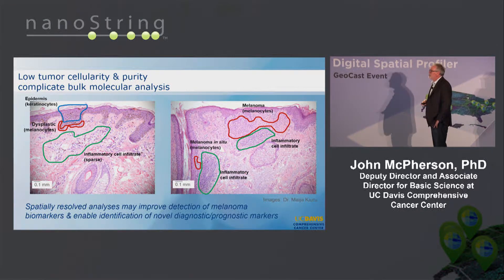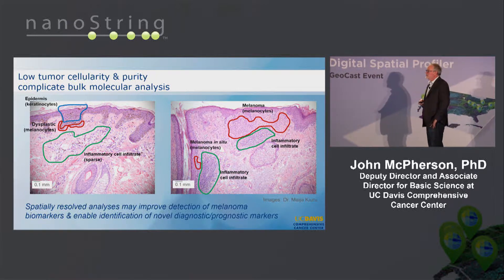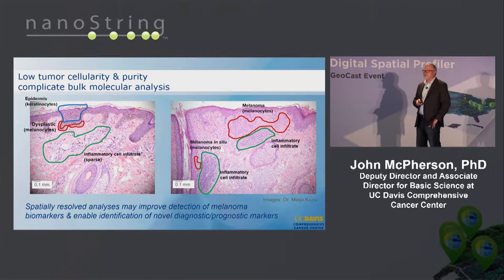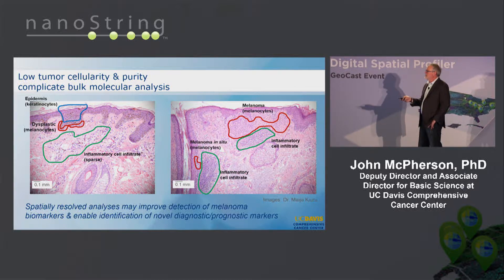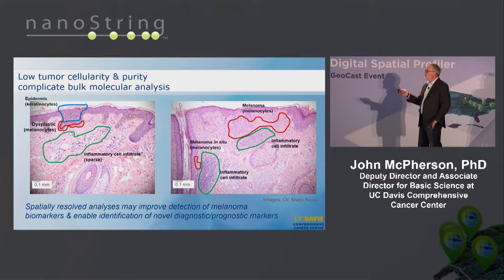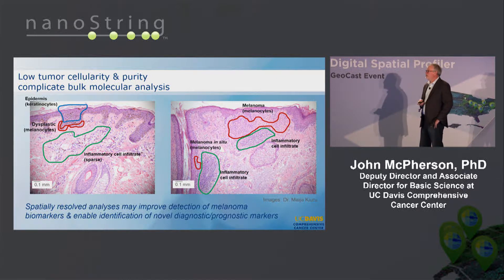One of the problems with looking at melanoma is these are typically small samples, especially at the early stages we're interested in. They're very heterogeneous, as you can see here. There are different regions that we are interested in. If we grind this up, they're small and that's a difficult challenge — we can get some information but we lose all the spatial information. That's why the GeoMx platform really appealed to us, and we were fortunate enough to have a collaboration with NanoString.